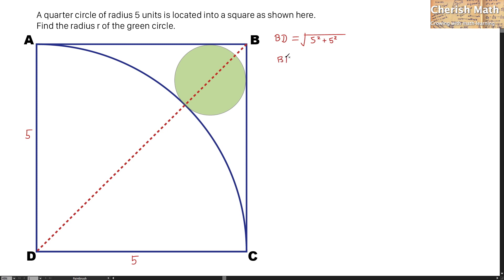Now BD gives a value of 5 multiplied by the square root of 2. Let me mark this point here as E where the two circles touch each other.